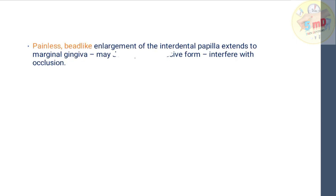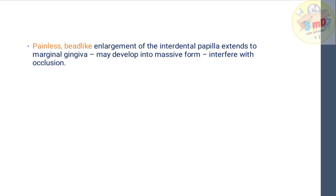The next type is drug-induced gingival enlargement. There are three main drug categories that cause this. The general features are: painless, bead-like enlargement of the interdental papilla which extends to the marginal gingiva, and which may develop into a massive form that interferes with occlusion — this is a classical feature of drug-induced gingival enlargement.